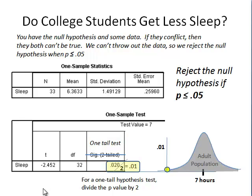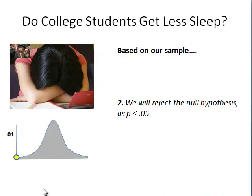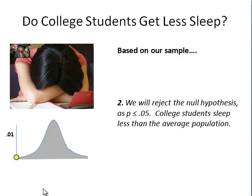We get to reject the null hypothesis if p is less than or equal to 0.05. In this case, we'll be able to reject the null hypothesis since our p-value of 0.01 is less than or equal to 0.05, and we'll conclude that college students sleep less than the average population.